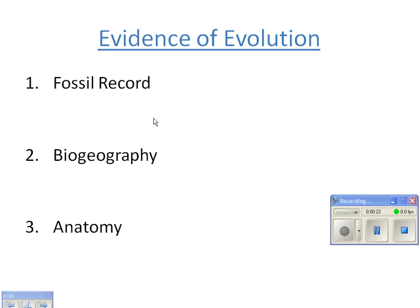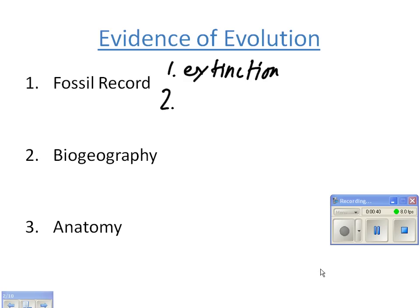The fossil record shows us two things: one, extinctions happen and are real — you look back in the fossil record and there are organisms present that are no longer present today because of extinction. The fossil record also very clearly shows us change over time.